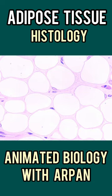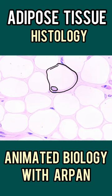In this H&E staining of a histological section, you can see there are large vacuoles and on the side there are small nuclei present. Basically, what you are seeing are big cells with large nuclei, and the nuclei are pushed towards one side. There is a large vacuole, and this vacuole is nothing but a fat droplet.